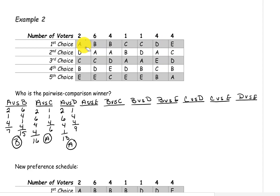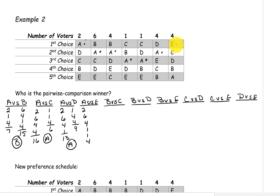Next, A versus E. A is above E on the first two, on the six, on this four, on the one, on this one, and on this four. And on the last four, E is above A. So E only has four and A has a total of 18, so A is the winner of that pairing.